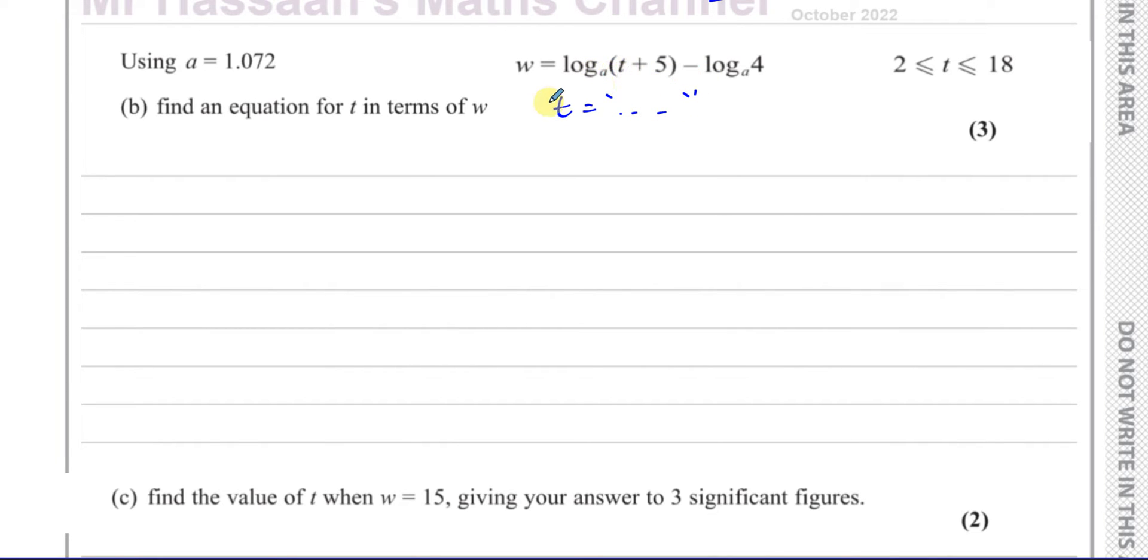So if we first of all just rewrite this, we want to get rid of this logarithm from this equation. So we've got to combine these logs together to do that. That's one way of doing it. So w equals, you'll have log base a. And you can write this as a fraction (t+5) over 4.